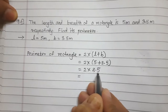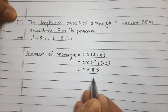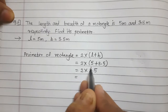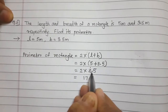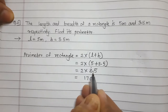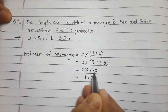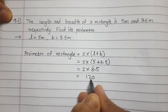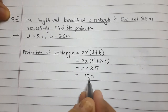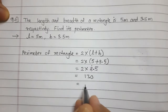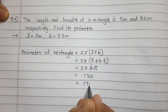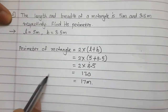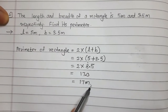Now 2 multiplied by 8.5. 2 times 5 is 10, write 0 and carry 1. 2 times 8 is 16 plus 1 is 17. After the decimal point there is 1 digit, so we place the decimal point giving 17.0, which is 17 meter. So the perimeter of the rectangle is 17 meter.